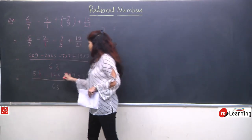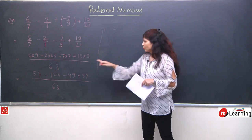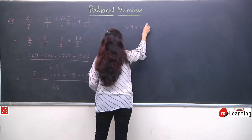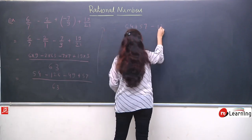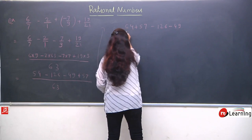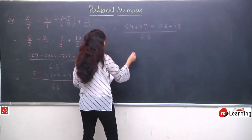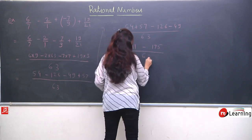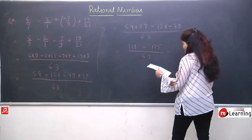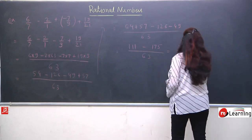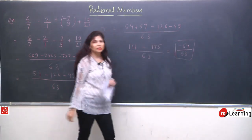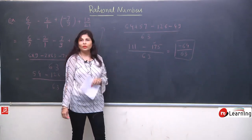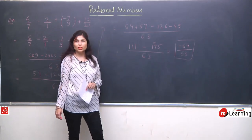We have 2 positive terms and 2 negative terms. Positive: 54 + 57 = 111. Negative: 126 + 49 = 175. So we get 111 - 175 = -64 upon 63. The answer is -64/63. Why minus 64? Because the greater number has negative sign and we put the sign of the greater number. This is our final answer: -64/63, since 64 and 63 share no common factor, it is already in simplest form.